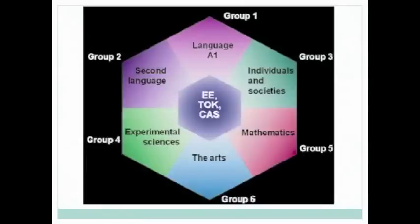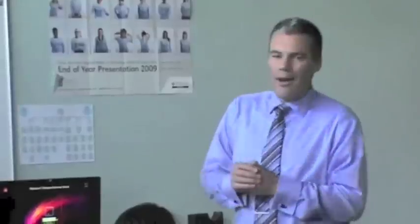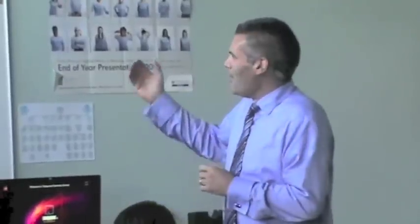Group 4 are the experimental sciences: chemistry, physics and biology. Group 5 is a mathematics course, a general mathematics course. And then group 6 is the arts, which is fine arts or performing arts like music, dance and drama.